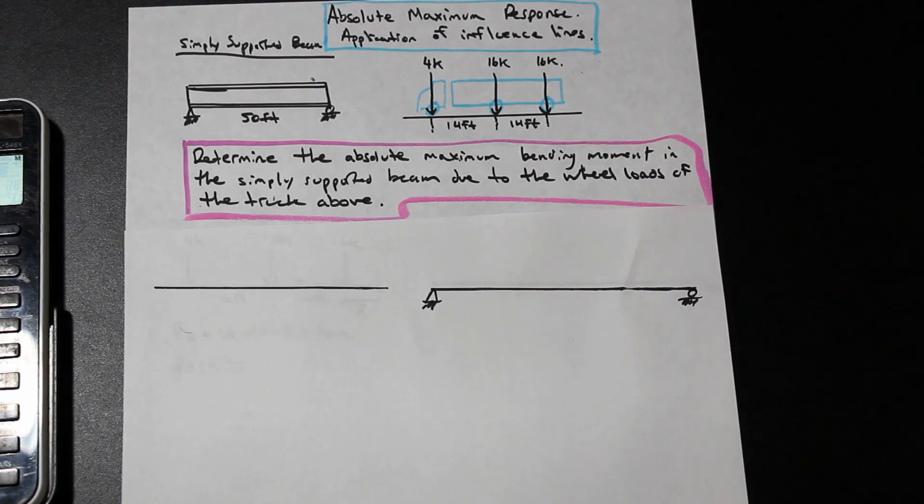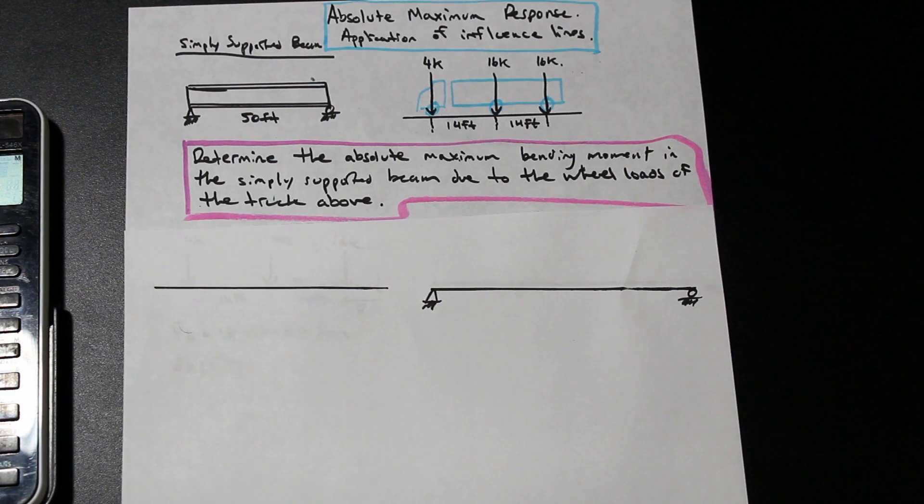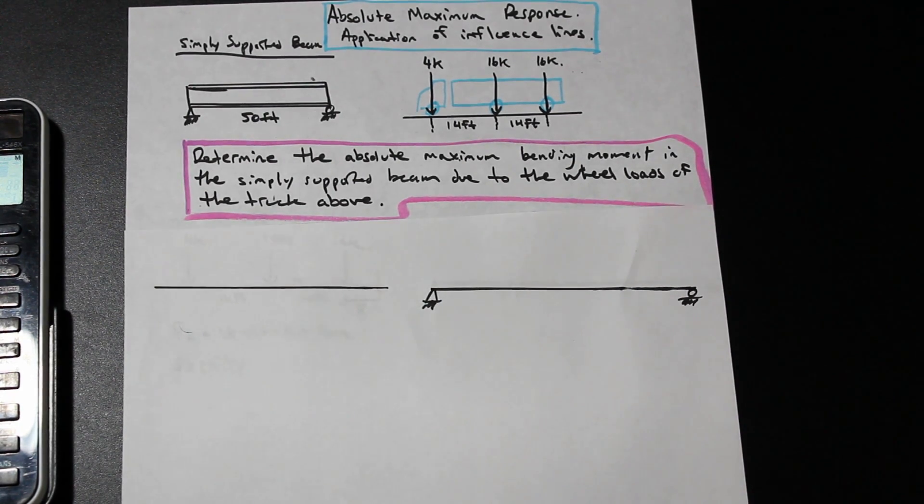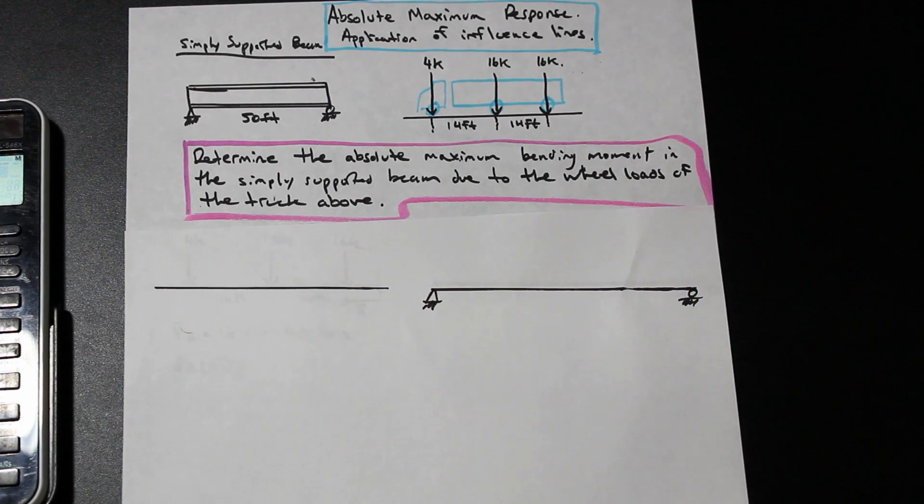In this question we have a beam, it's a plate girder, it looks like a bridge, it's about 50 feet long, and we have a truck passing over it containing a series of concentrated loads in the form of wheels. One of the wheels is 4 kip and the other two are 16. We're asked to determine the absolute maximum bending moment in the simply supported beam due to the wheel loads of the truck above.